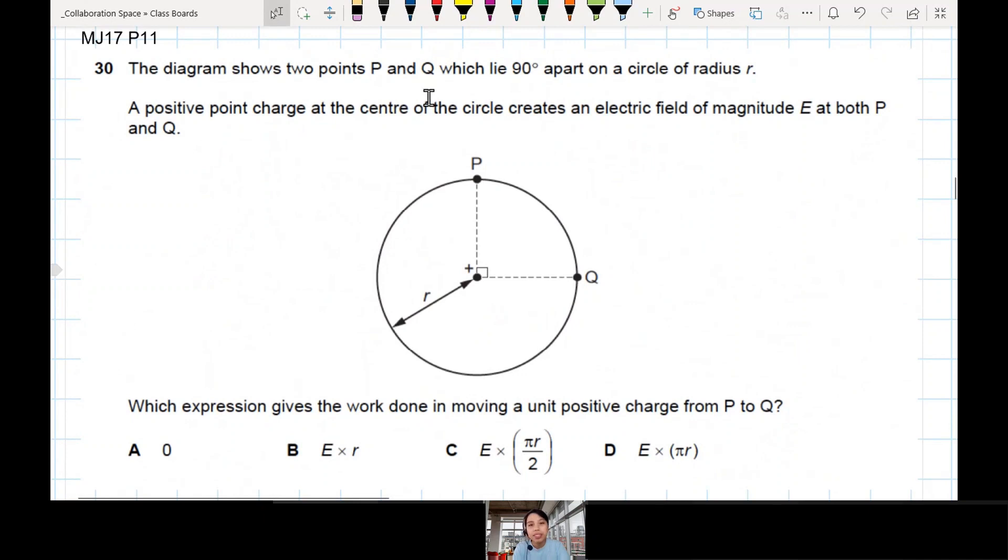The diagram shows two points, P and Q. A positive point charge is right at the center, generating an electric field at both P and Q. Which expression gives the work done moving a positive charge from P to Q? You move a charge from here to here, what's the work done?